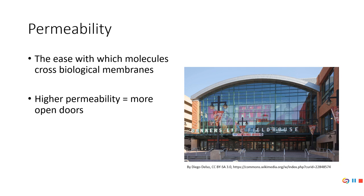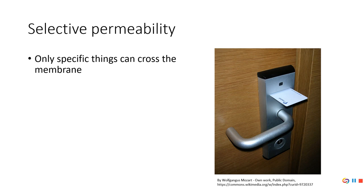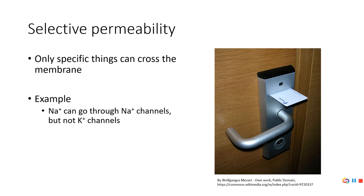When you think of permeability, one way to look at it is the number of doors. If I have high permeability, there are more doors that are open. But with permeability, generally speaking, it's what we call selective permeability — only specific things can cross the membrane, and oftentimes only at specific times. For example, sodium can go through sodium channels, but potassium can't go through a sodium channel.